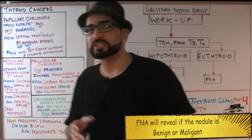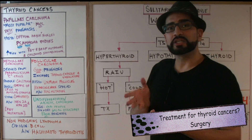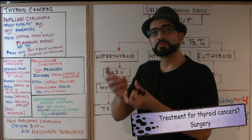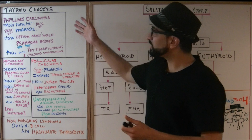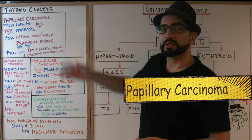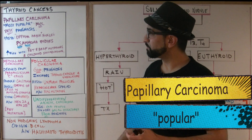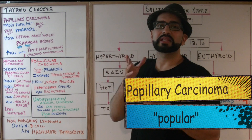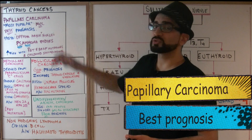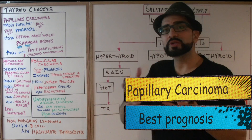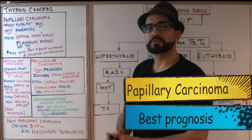Now we talk about the cancerous situations. The treatment for all thyroid cancers is surgery — a lobectomy — where you remove the cancerous lobe of the thyroid gland. The first cancer is papillary carcinoma. Papillary carcinoma is the most common carcinoma of all those listed. Think of the letter P in papillary and think 'most popular.' It has the best prognosis of all the thyroid cancers.